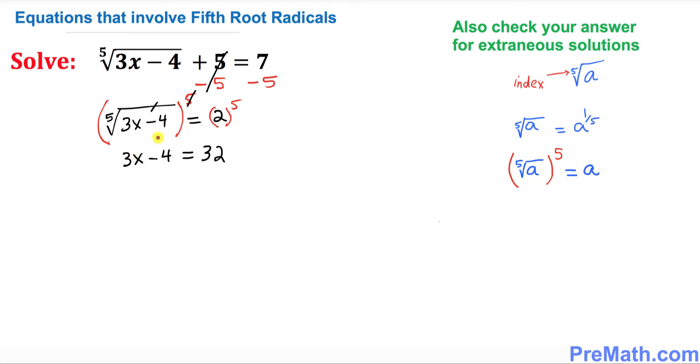All right, so let's go ahead. We are pretty much done. We want to add 4 on both sides, so this positive and negative 4 cancel out. We got 3x equal to 36. Divide both sides by 3, so x turns out to be 12 as our solution.